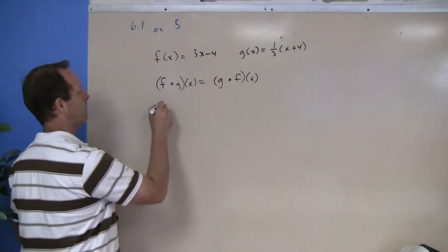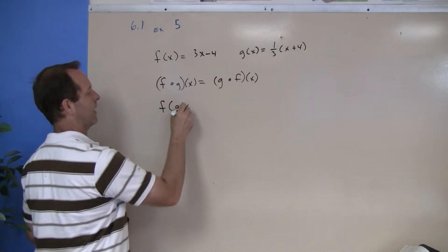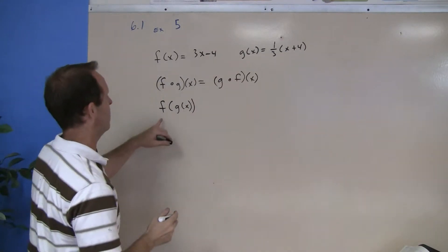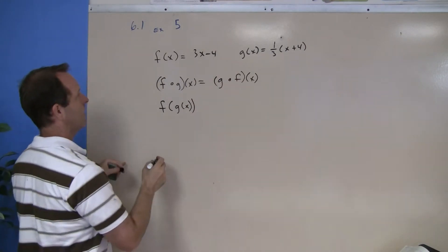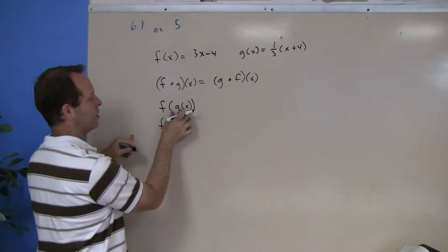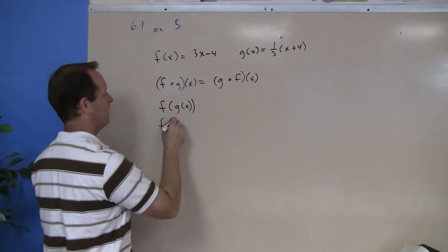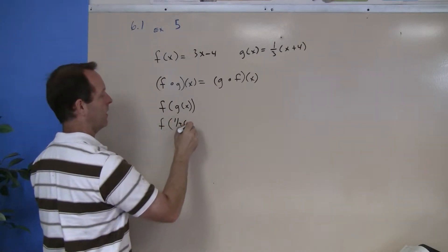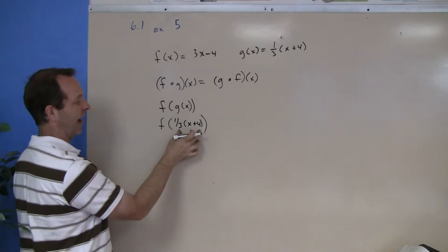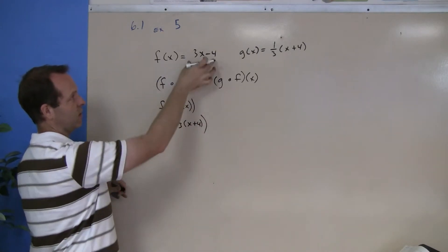So what I'll do is I will look at f of g of x and see what we do with this. This becomes f of g of x. So I'm going to write it one step at a time. I'm going to replace g of x with its function, which is one-third x plus four. I'm going to take this entire value and insert it into this function.